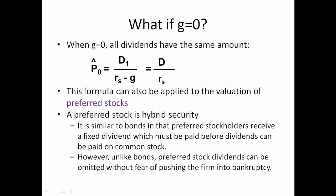When G = 0, all dividends are the same amount, and the formula simplifies to P0 = D / Rs. This formula also applies to preferred stock valuation. Preferred stock is a hybrid security where preferred stockholders receive a fixed dividend that must be paid before common stock dividends, but unlike bonds, preferred dividends can be omitted without pushing the company into bankruptcy. Since preferred dividends are assumed constant, we use the same formula.